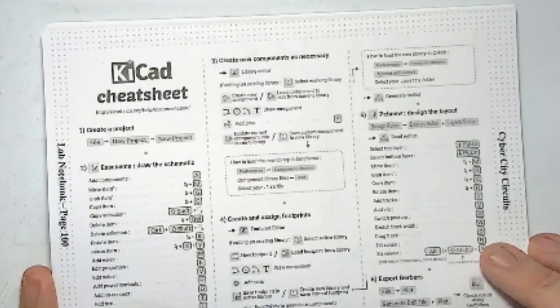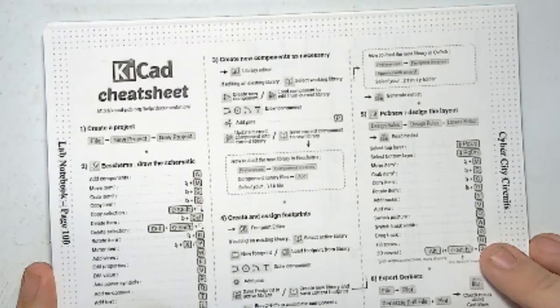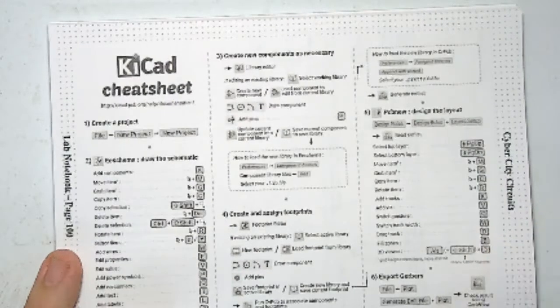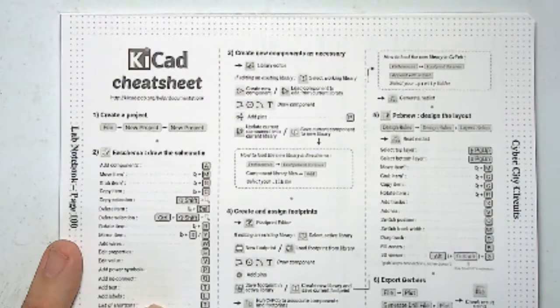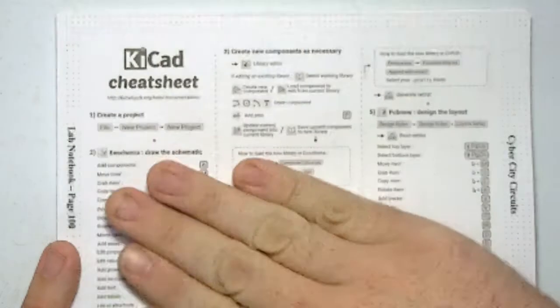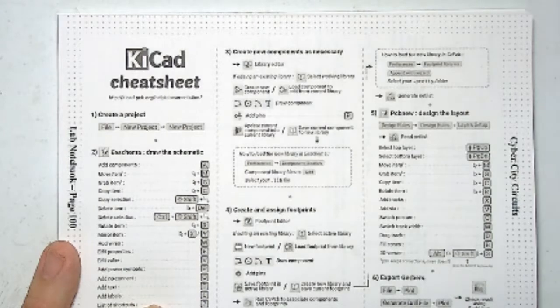And then on the very back, we have a KiCad cheat sheet. I use KiCad a lot for PCB design, and the hardest thing for me when I started was the shortcuts, the hotkeys. So I went ahead and put all the hotkeys in the back of the book so that you can quick reference it.